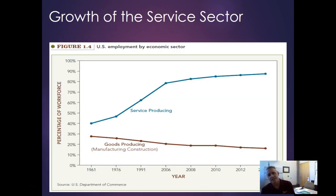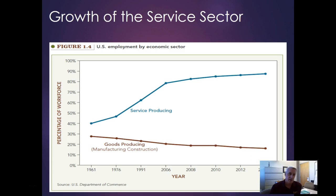What we've been seeing steadily for years — and this chart only goes up to 2014, as the US Department of Commerce changed how they present stats after that — is the percentage of workforce in service-producing organizations versus goods-producing organizations. You can see this divergence where service-producing companies have gone way up as a percentage of the workforce. Now many companies are hybrids, so it isn't necessarily one way or the other.